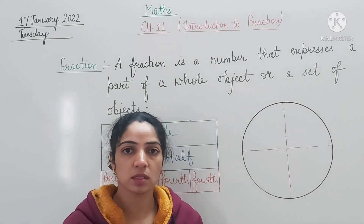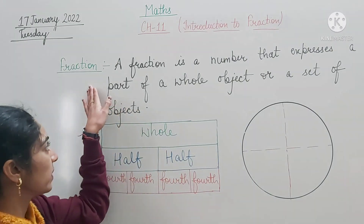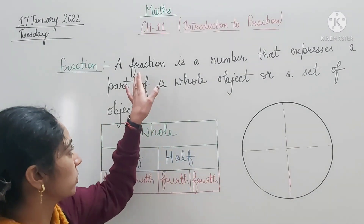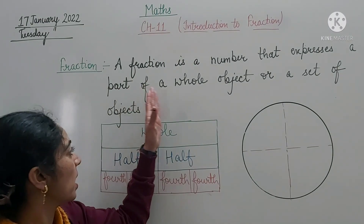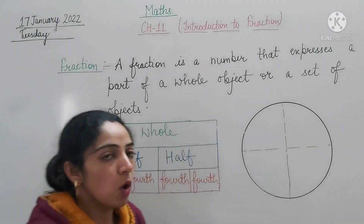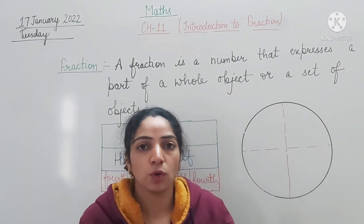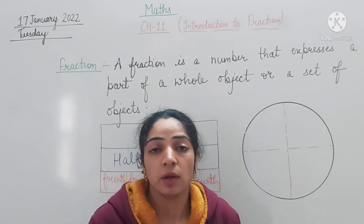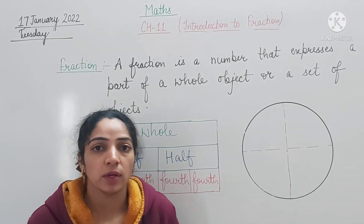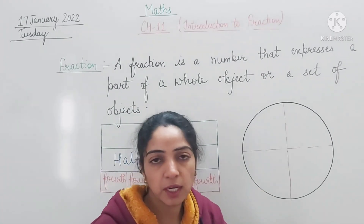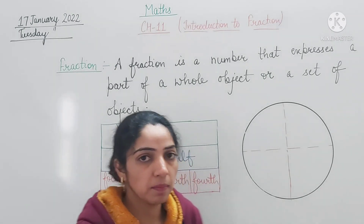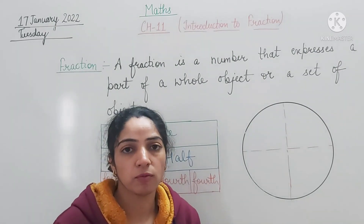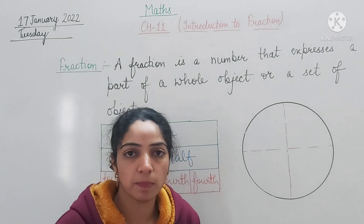First of all, let us discuss what is a fraction. A fraction is a number that expresses a part of a whole object or a set of objects. It represents a part of a whole. If we have been given a whole or complete object, the fraction describes what part of that whole we get out of the total parts.